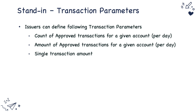What are the transaction parameters that issuers can set? Issuers can define the number of approved transactions for a given account on a given day — for example, no more than 10 transactions per account per day. This is a velocity parameter. Apart from the count, issuers can also define the aggregated amount of approved transactions per account per day, as well as the maximum single transaction amount that could be approved.